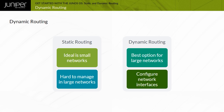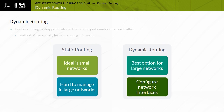With dynamic routing, you configure the network interfaces to participate in a routing protocol. Devices running routing protocols can dynamically learn routing information from each other. When a device adds or removes routing information for a participating device, all other devices automatically update.